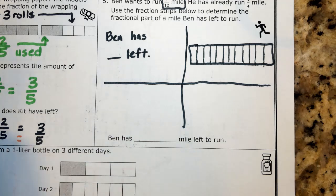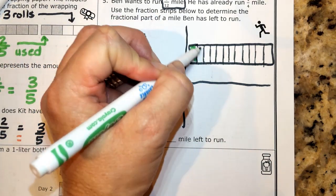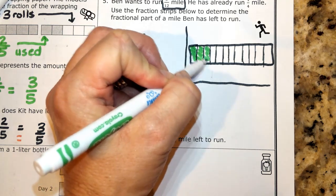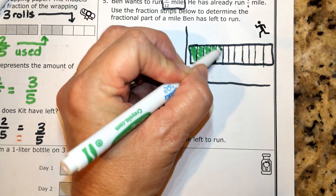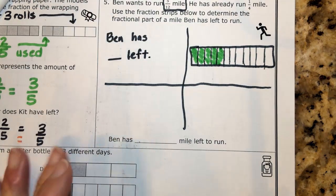And I'm going to go ahead and take my marker and shade in 5 of the 12 pieces. 1, 2, 3, 4, 5. So this is the amount that he wants to run.